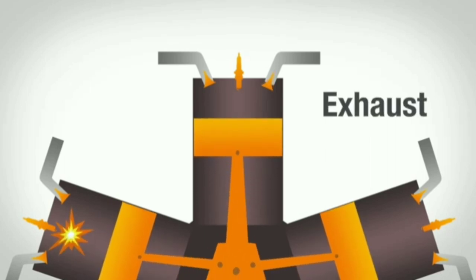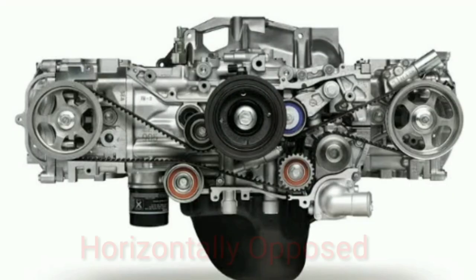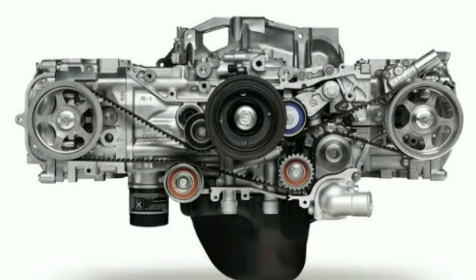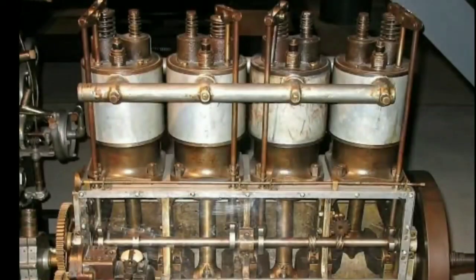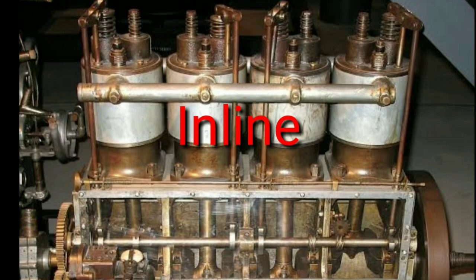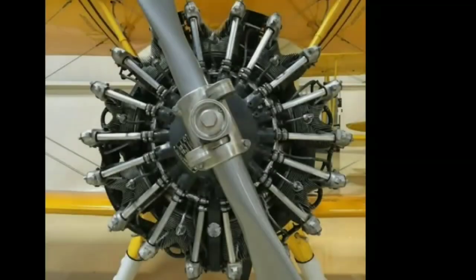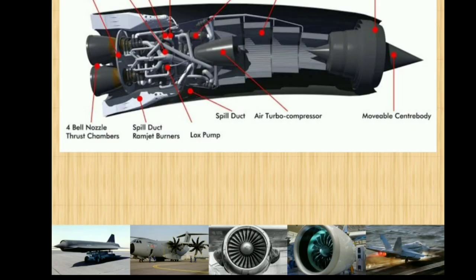During the exhaust stroke, the exhaust from the ignition is forced out of the cylinder. The different types of piston engine are the horizontally-opposed piston engine, the inline engine, the V-type engine, and the radial piston engine.